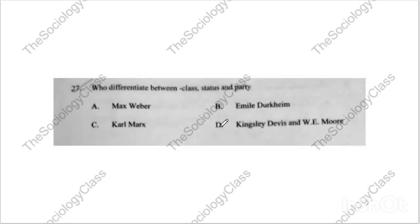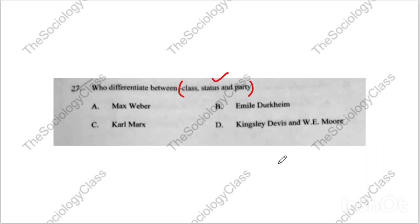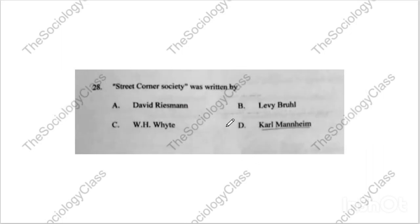Question number twenty-seven: 'Who differentiated people by class, status, and party?' Options: Max Weber, Emile Durkheim, Karl Marx, or Kingsley Davis and William Moore. The correct answer is A — Max Weber.